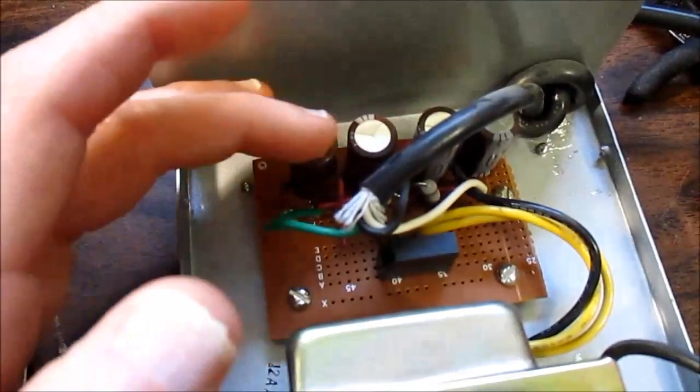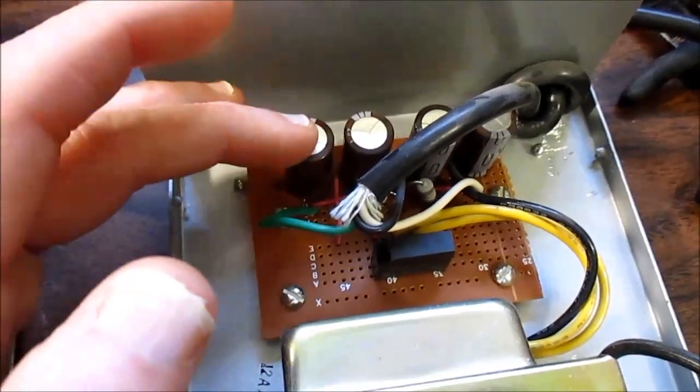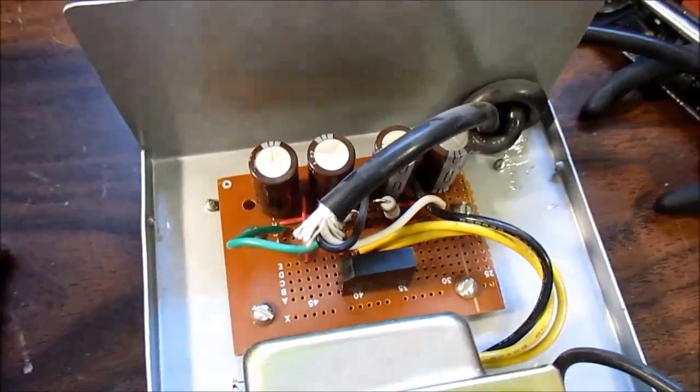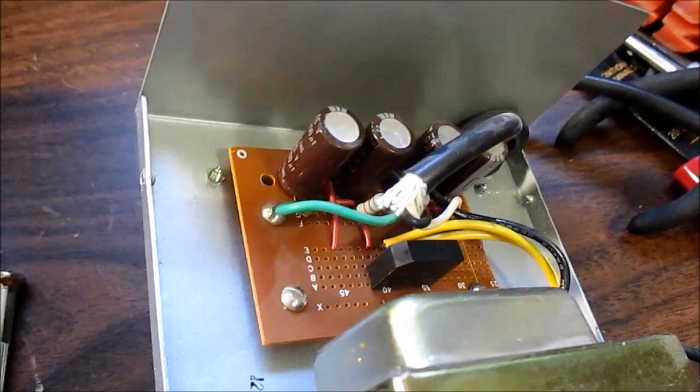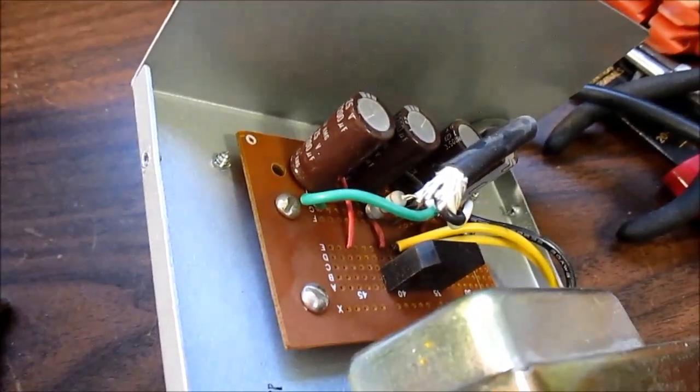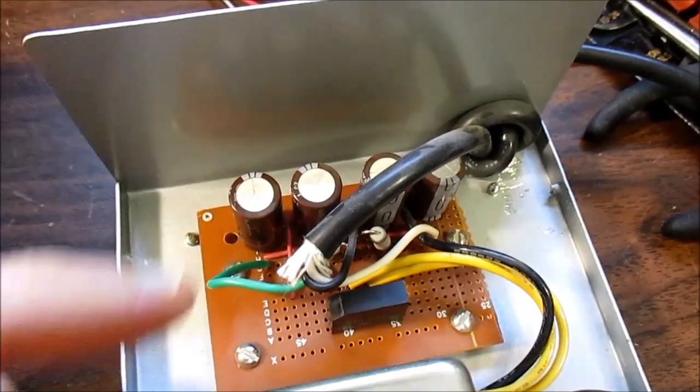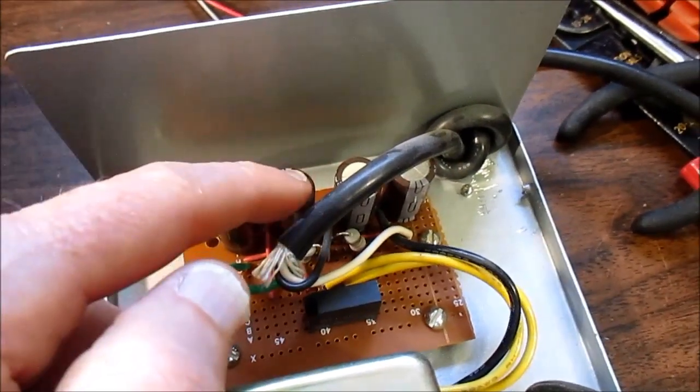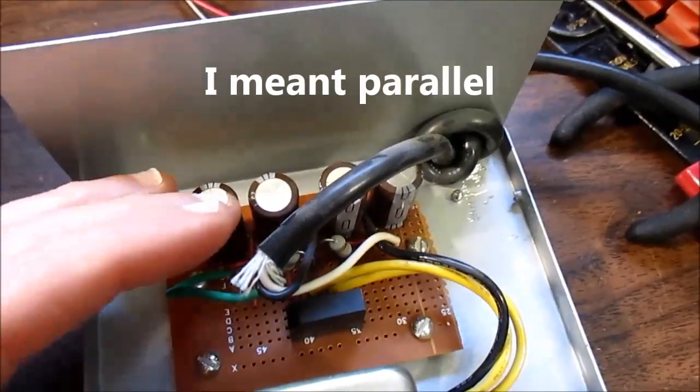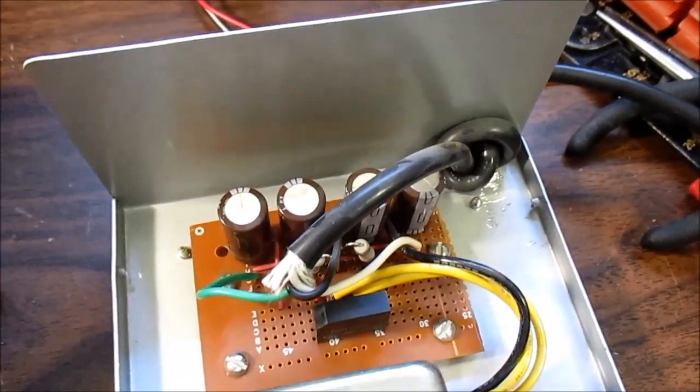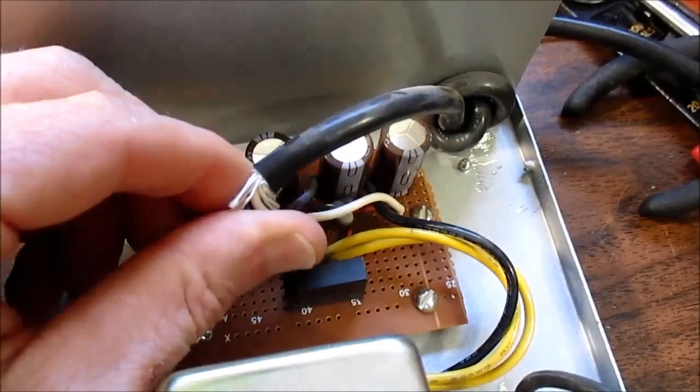And of course we have a stereo amplifier. So we have 4400 microfarads per rail. And that is right at the minimum I would recommend. I mean, it'll work. But nowadays I would probably use two 4700s in series or 10,000 or maybe a 6800. But yeah, this is near the bottom.